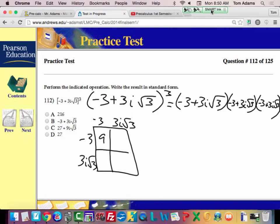This becomes positive 9. This becomes negative 9i root 3. This becomes negative 9i root 3. And then this one becomes positive 9i squared. And the square root of 3 squared is just 3.